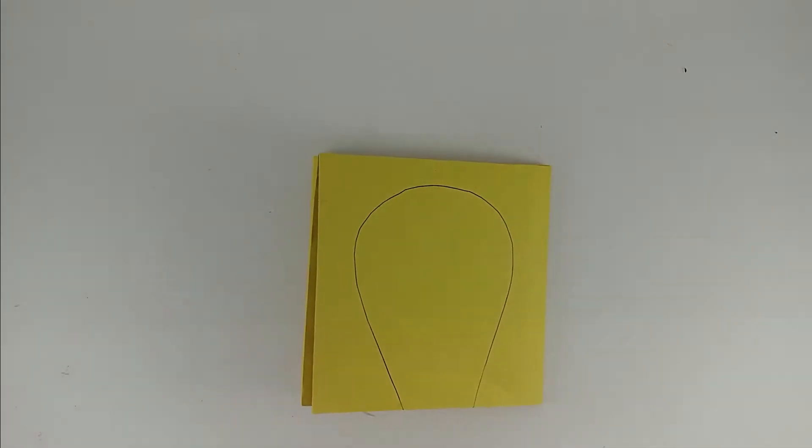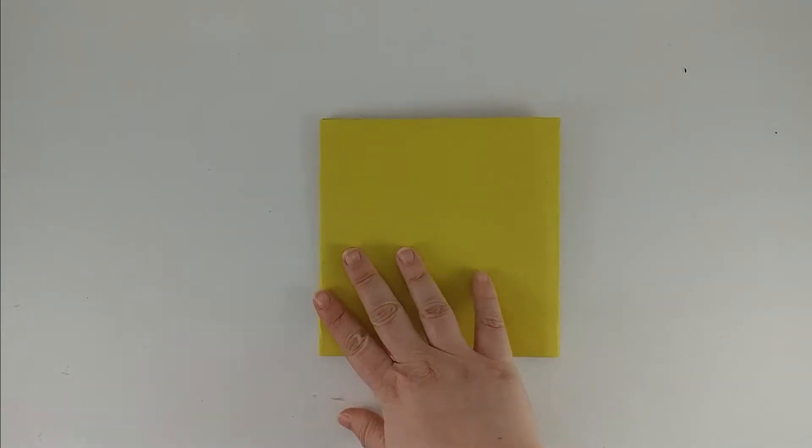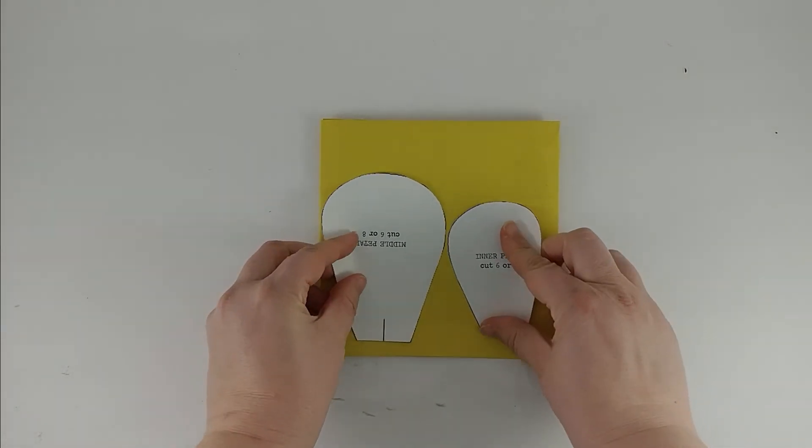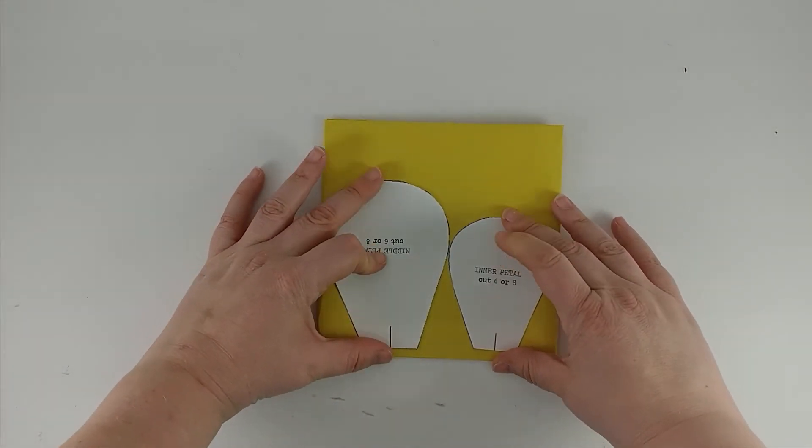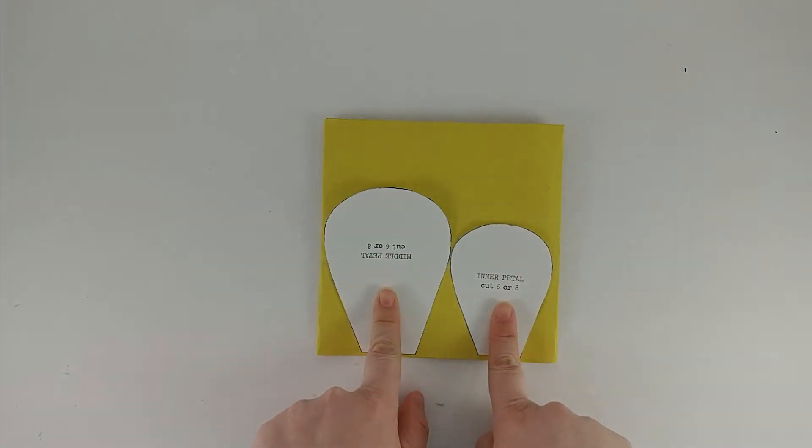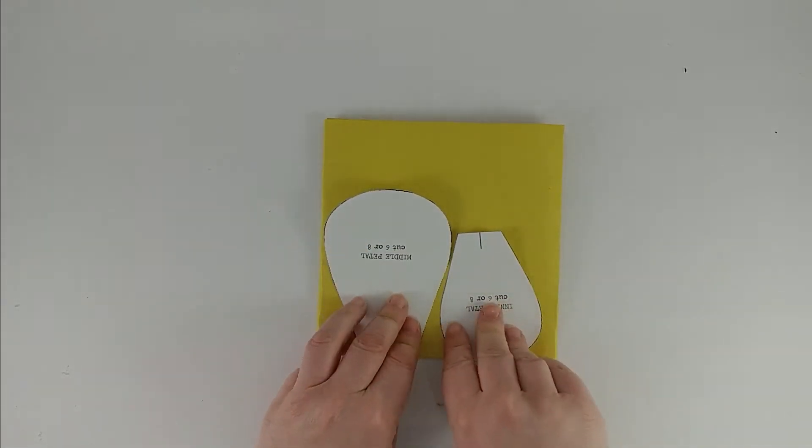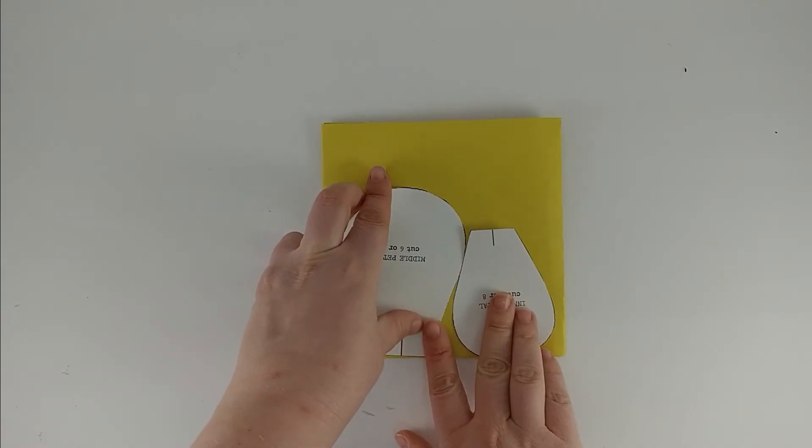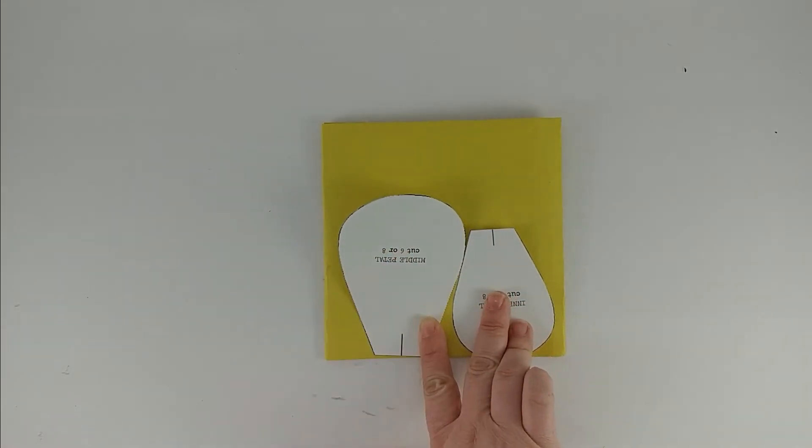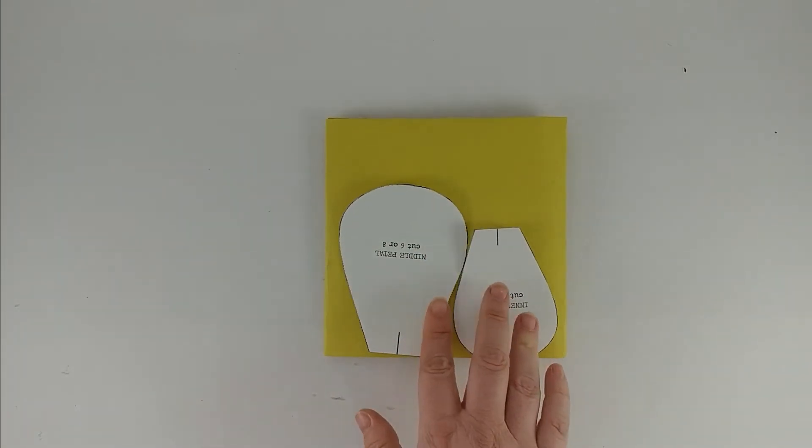Do the same thing with your other piece of paper. You can fit your medium and your small petal on the same piece. Maybe even flip one over so that you have a little bit more play and wiggle room. Just trace around them and cut them out so that you have six of each petal.